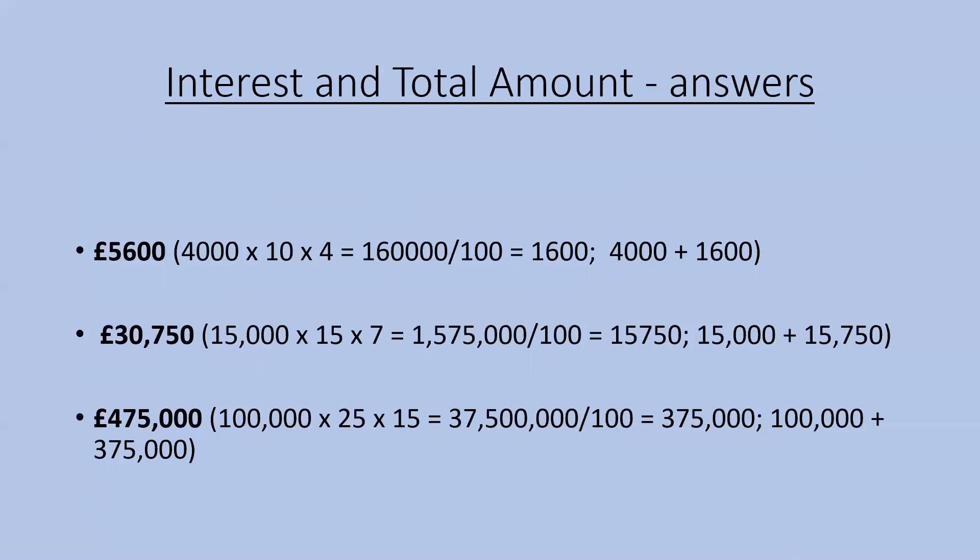The third and final one: the total to pay back would be £475,000. This is based on a £100,000 loan at 25% interest paid back over 15 years. So £100,000 times 25 times 15 equals £37,500,000. Divide that by 100, giving £375,000 in interest paid over the 15 years. Add that £375,000 to the £100,000 loan, giving a grand total of £475,000 to pay back.